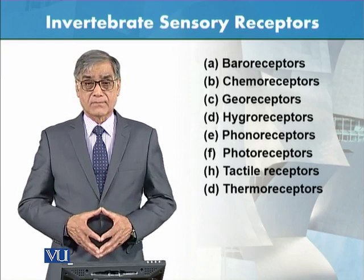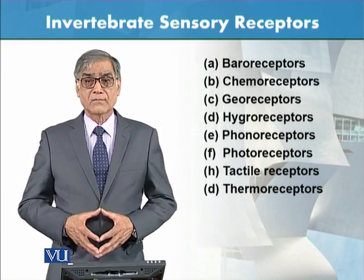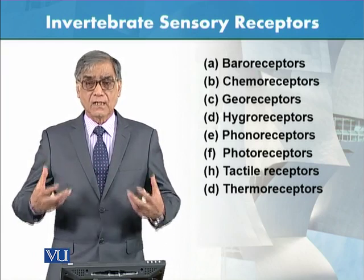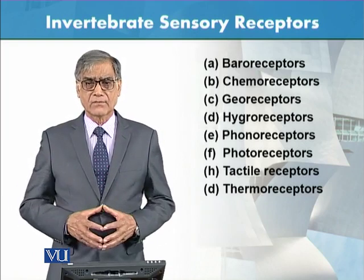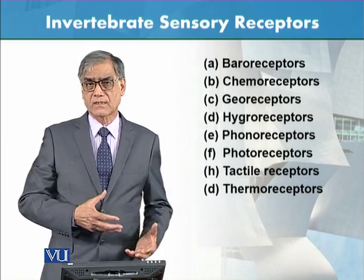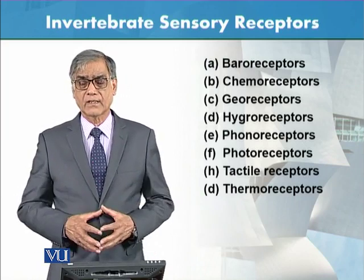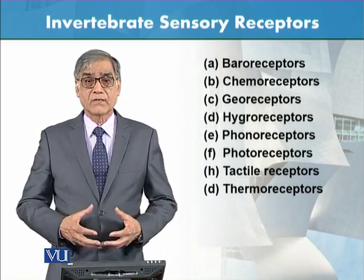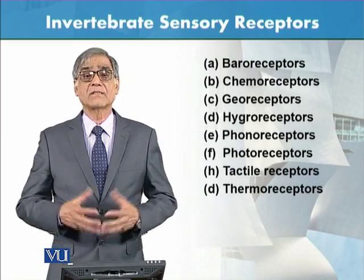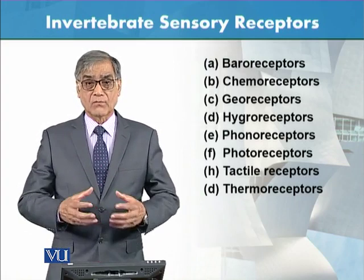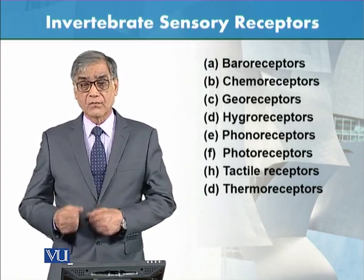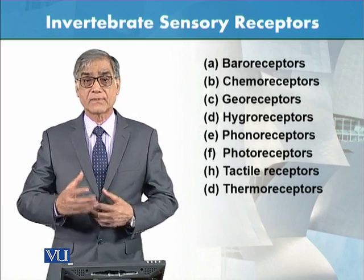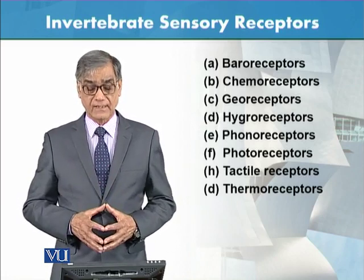Then there are chemoreceptors. As the name suggests, if air یا water کے اندر certain chemicals are present, the animal moves toward or away from them — depending on the stimulus. یہ chemical receptors کی وجہ سے اس کے اندر یہ behavior آئے گا۔